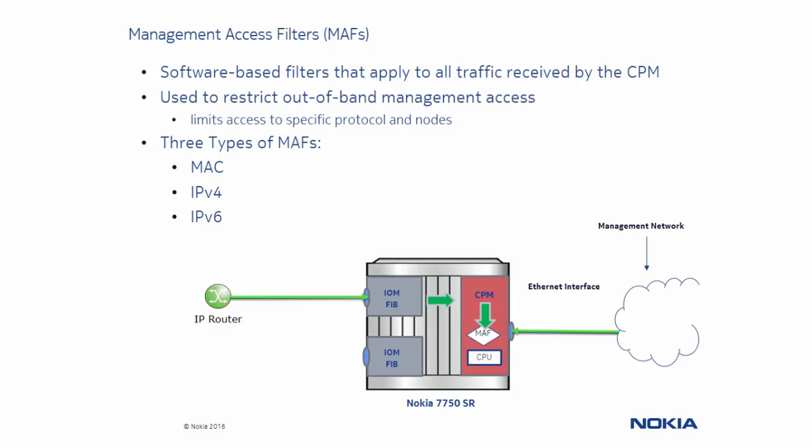There are three types of filters: MAC, IPv4, and IPv6, processed in the same order as CPM filters.